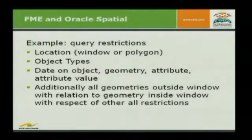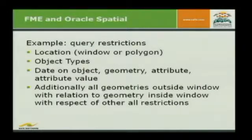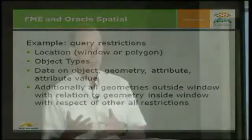Of course there's a location — we just want the data inside a window or a polygon to be retrieved. We just want to retrieve some object types, not all of them. On the object, geometry, attribute, and attribute value tables there were start and end dates, which makes it even more difficult. And additionally — and that was really a bonus — there were geometries that were partly inside my query window. So I had to query all things inside and add to it all things outside having a relation to something inside.